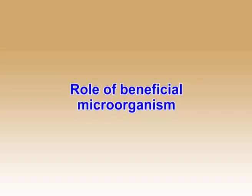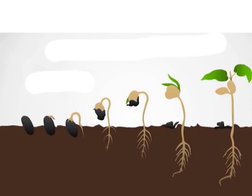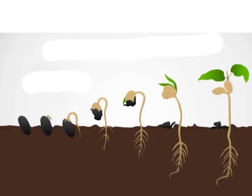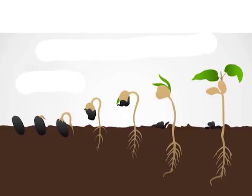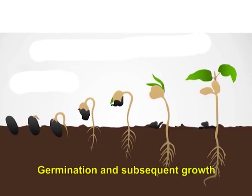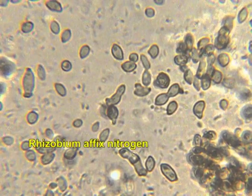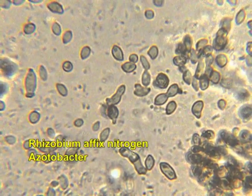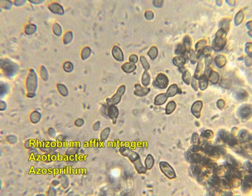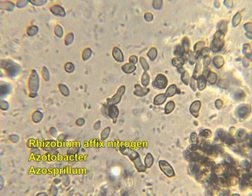Role of beneficial microorganisms: several microorganisms are involved in protecting the seed during germination and subsequent growth. Rhizobium fixes nitrogen, Acetobacter and Azospirillum secrete plant growth hormones.